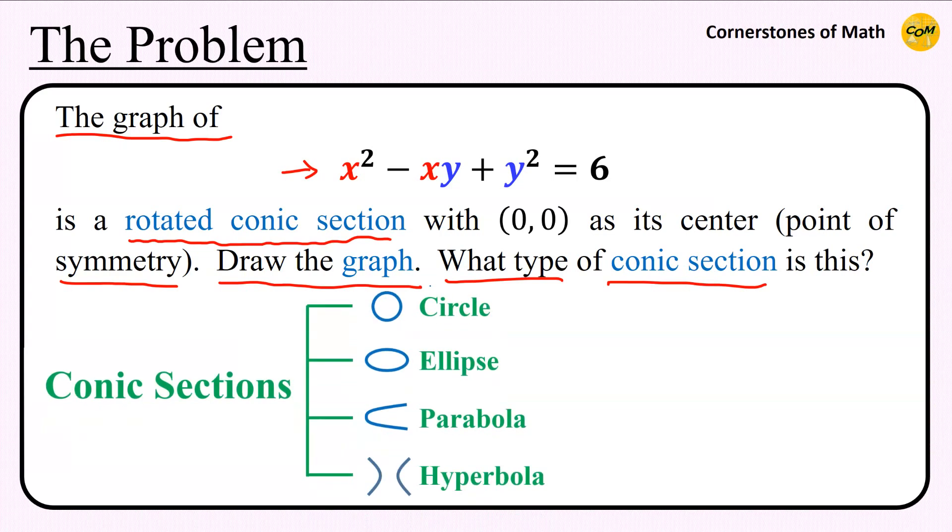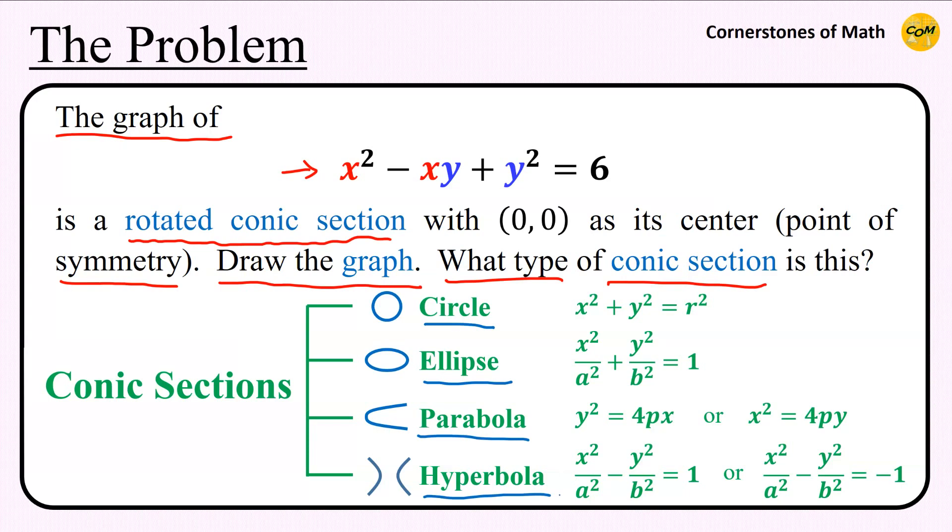You see, there are four types of conic sections: circle, ellipse, parabola, and hyperbola. For the most basic curves from each category, which are nicely aligned with x and y-axis, these are their standard equations. So the type of the conic section can be easily determined from its equation, but we have a problem.